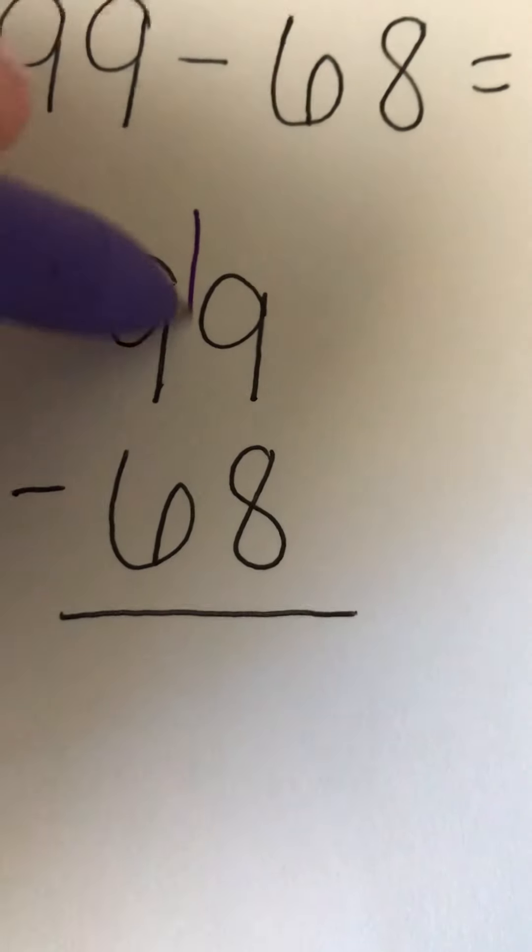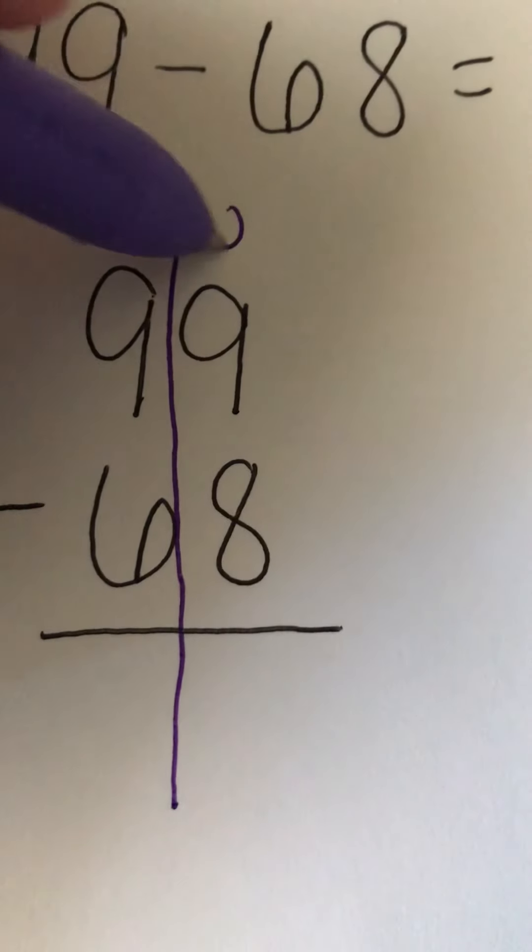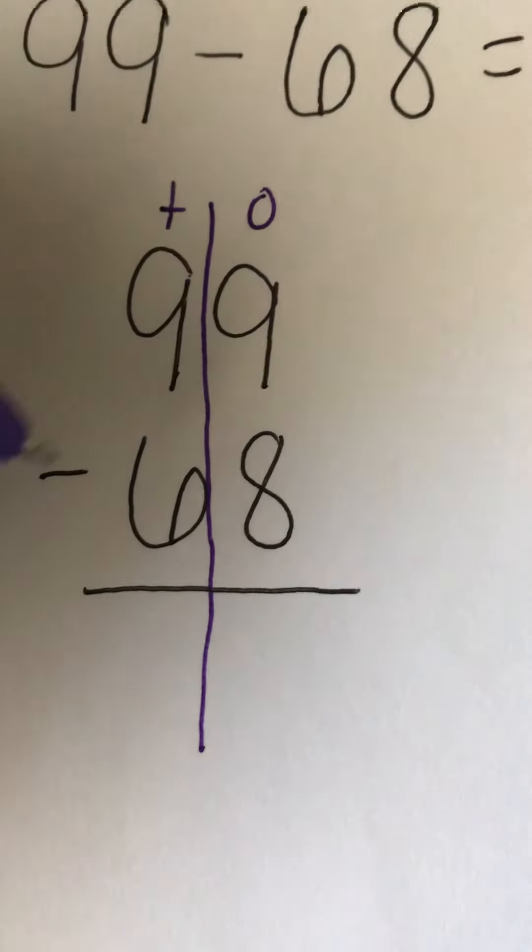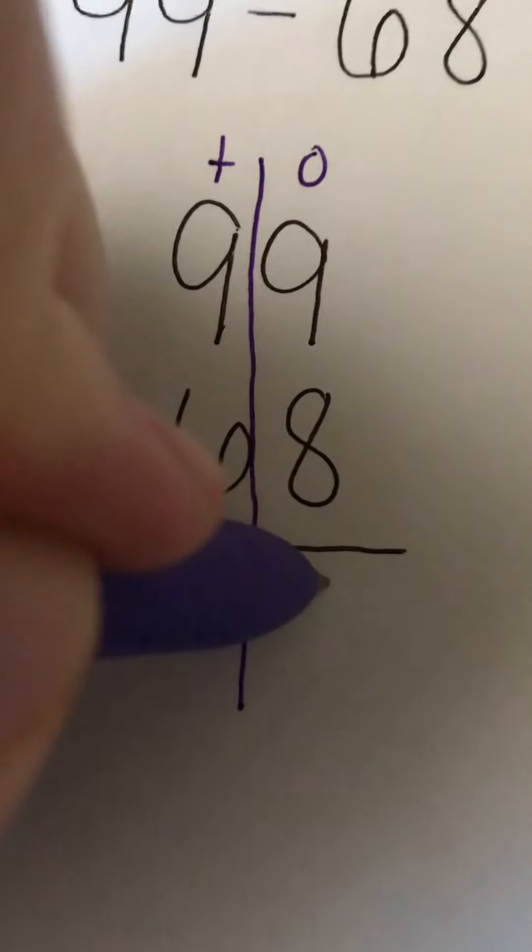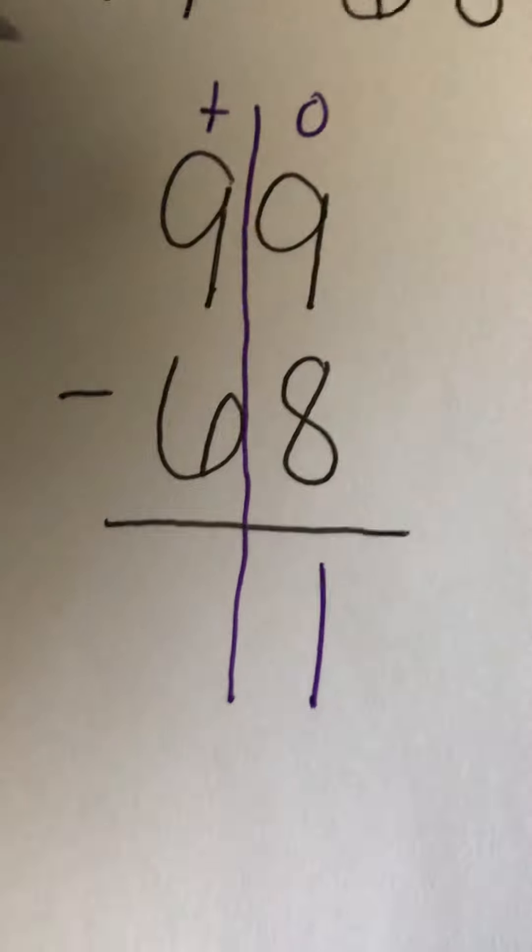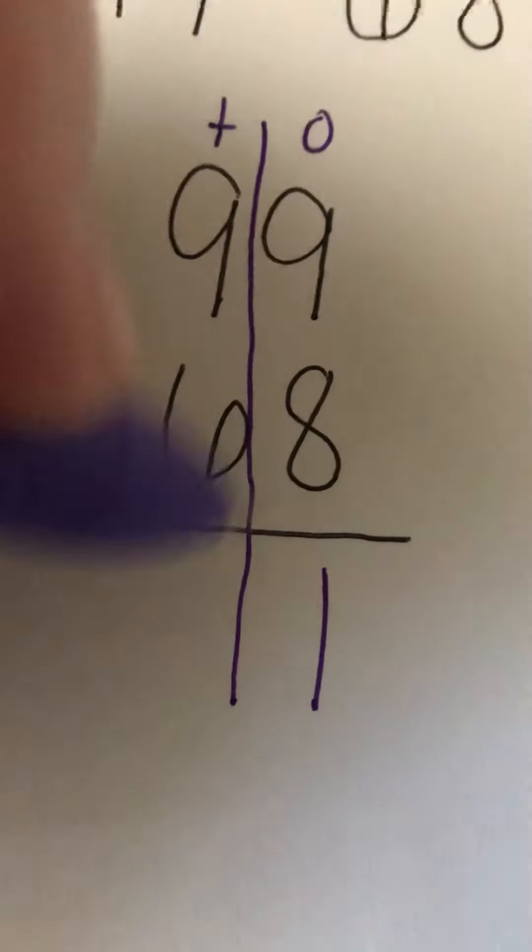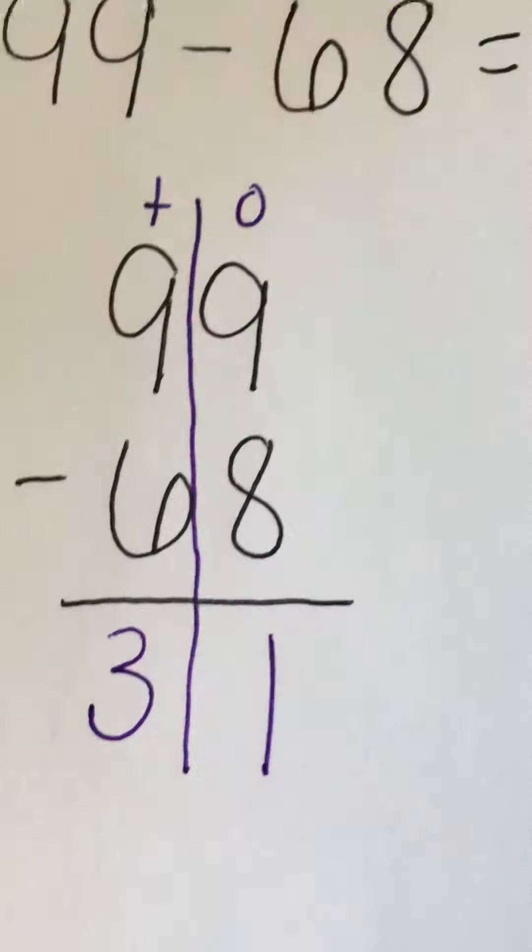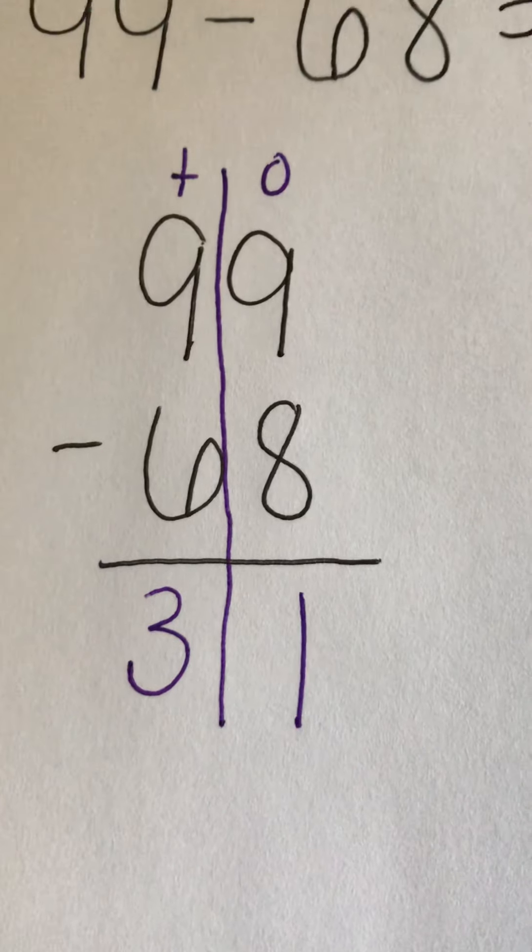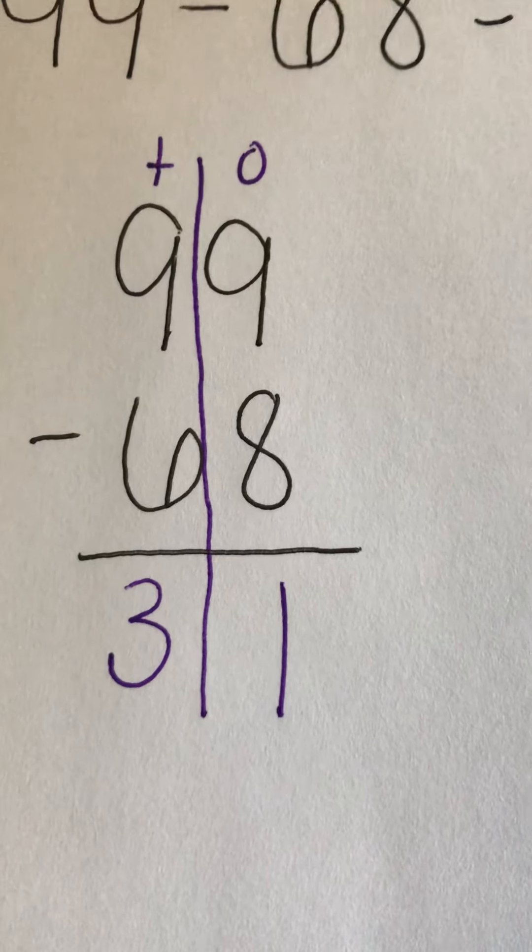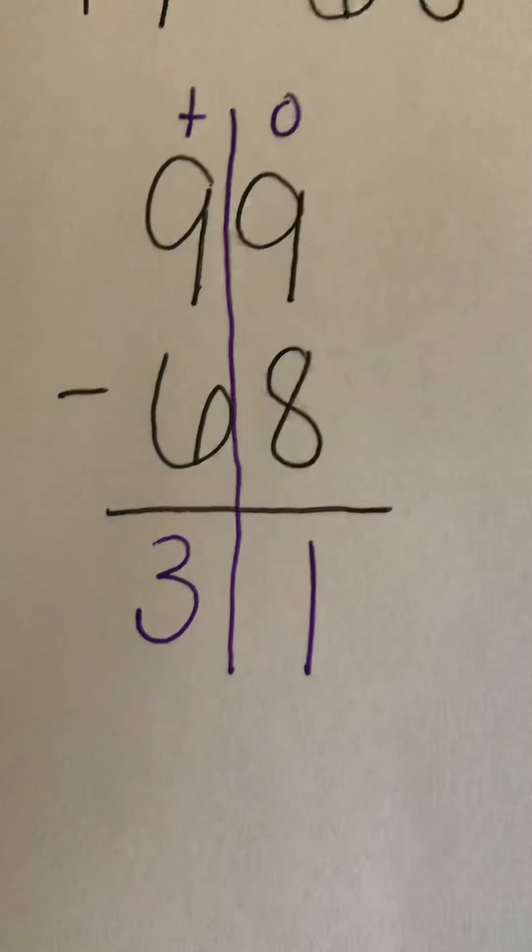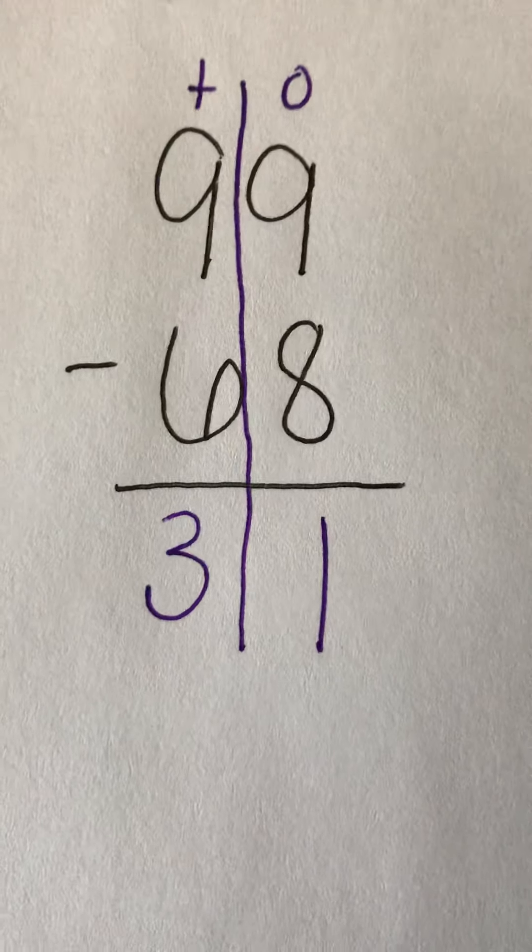So let's solve 99 minus 68 while we're here. My ones place, I have nine minus eight, which equals one. My tens place, I have nine minus six, which equals three. So 99 minus 68 equals 31. Good luck making all of your problems this week. I cannot wait to see what numbers you come up with.